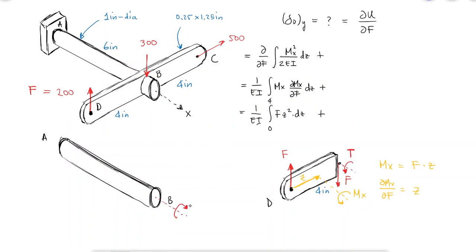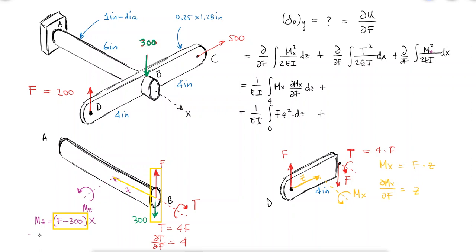With the free body diagram of member AB, we see that there's strain energy due to the torsion of torque T, which doesn't vary along the x-axis, and strain energy due to bending about the z-axis that does vary along the x-axis.